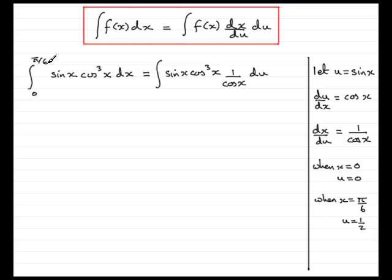So we need to put our limits in. When x was 0, we find that u was 0. When x was π/6, u is 1/2. You may find in some integrals with limits that this bottom limit turns out to be bigger than the top limit. Don't make the mistake of swapping the two limits around. Always keep them in their corresponding positions.